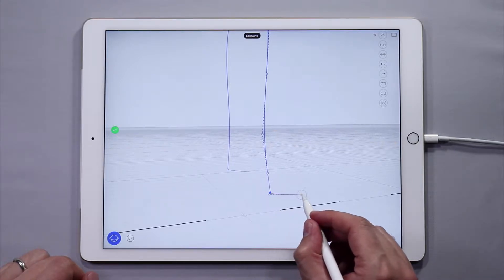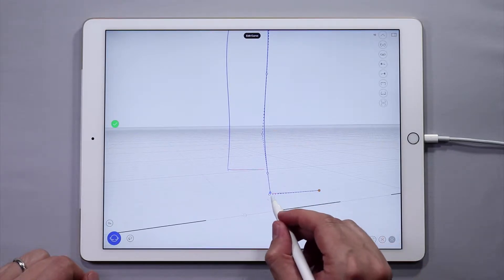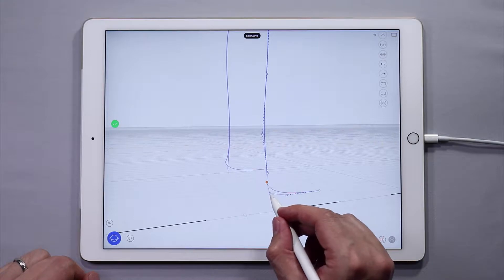And with symmetry on, the curves will actually move symmetrically, so if you just edit one curve, the other curve will change as well.